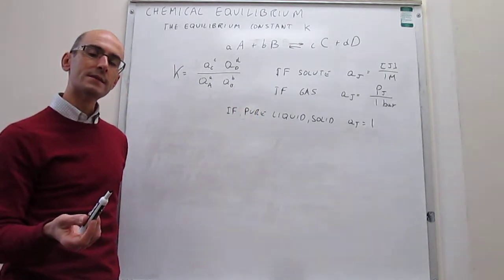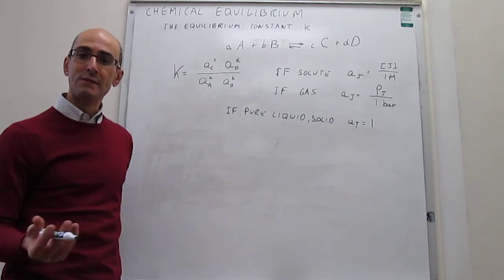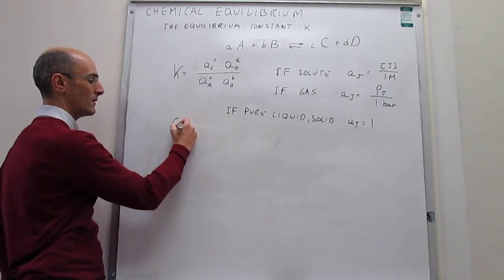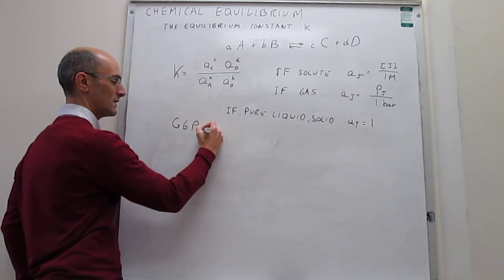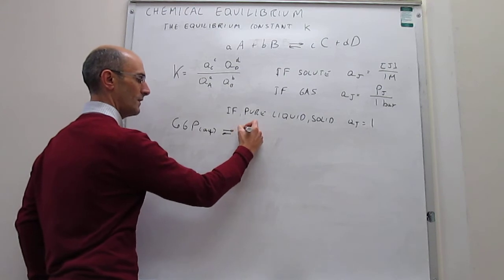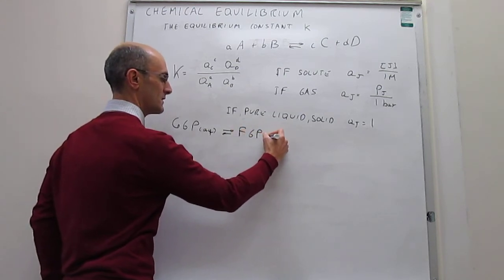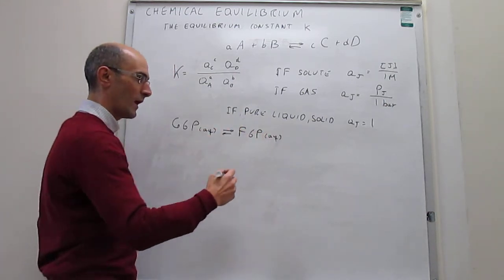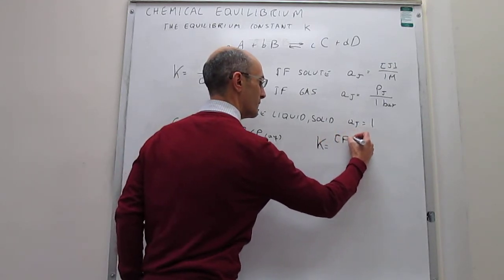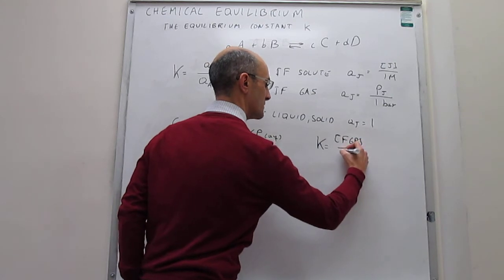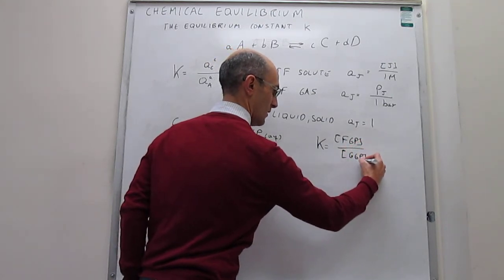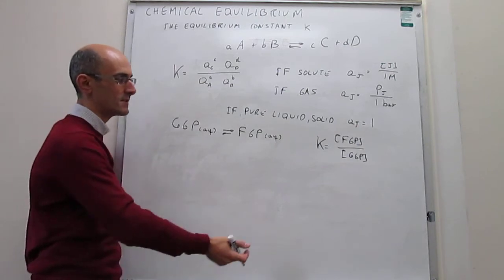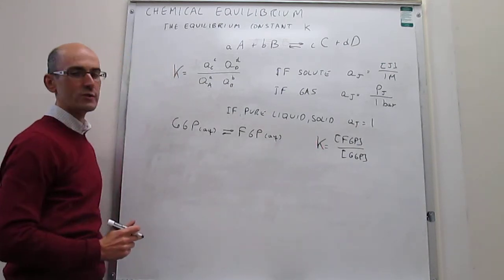Now we will see how this applies to specific examples. Let us return to the equilibrium from a prior video: the equilibrium between glucose-6-phosphate, which is a solute in an aqueous solution, and its isomer fructose-6-phosphate, which is also a solute in an aqueous solution. In the prior video, we wrote this equilibrium constant simply as the concentration of fructose-6-phosphate over the concentration of glucose-6-phosphate. We will now use the more accurate expression for the equilibrium constant and see how it reduces to that simple shorthand notation.